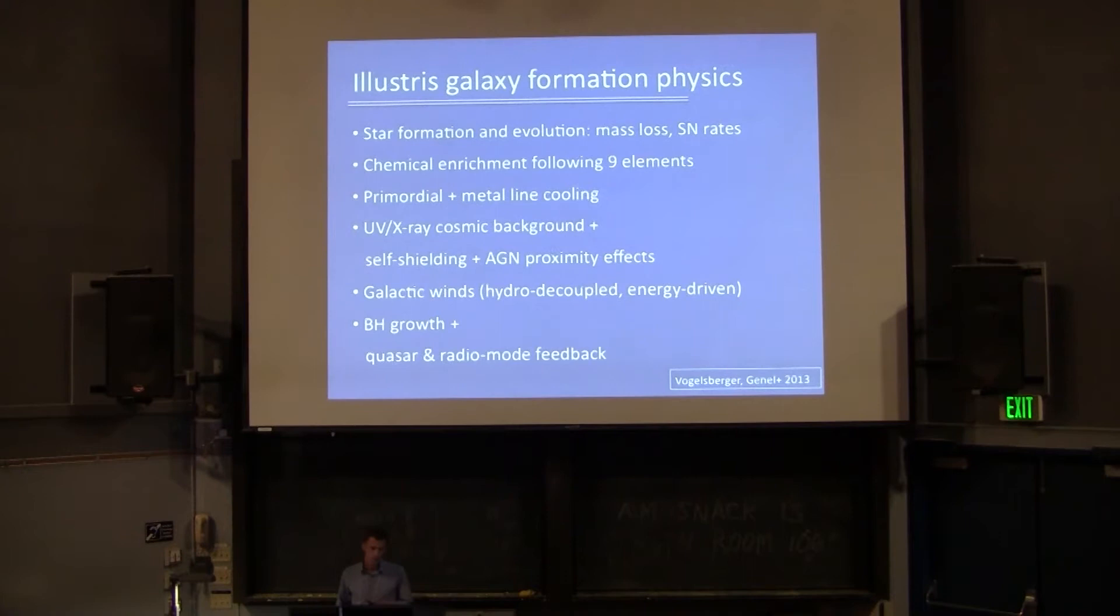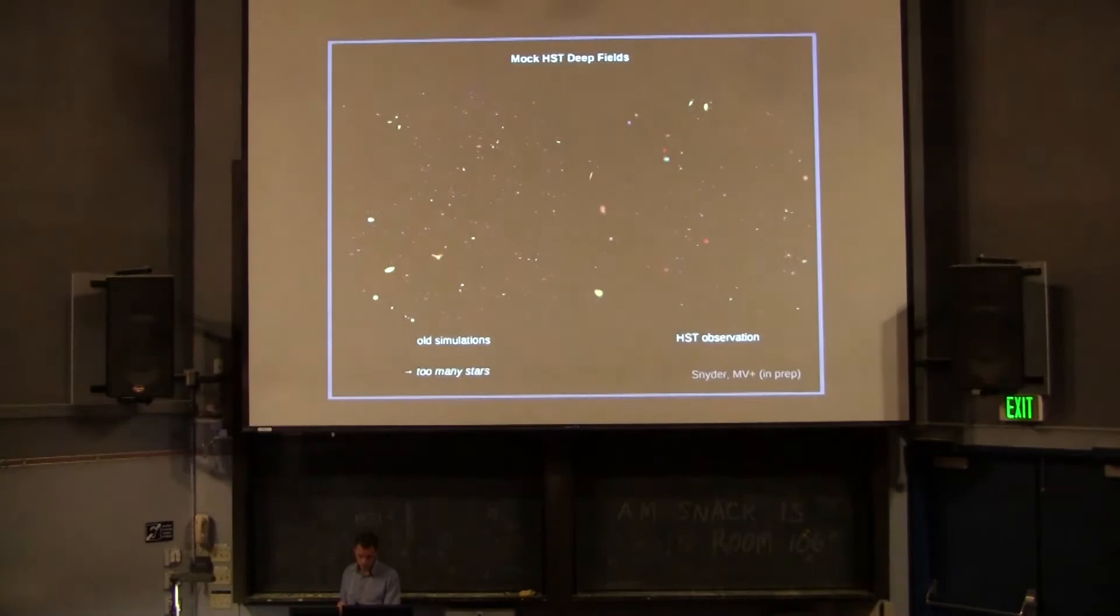So which physics did we use in these runs? More or less standard, but we try to be comprehensive. We have star formation and stellar evolution, so mass return from stars, metal enrichment, metal line cooling. We have black hole growth, feedback from black holes, including some radiation, some AGN proximity effects. Very importantly, we have galactic winds, a very simple prescription for galactic winds, which has been used for about 10 years now. And as I said, black hole growth and feedback.